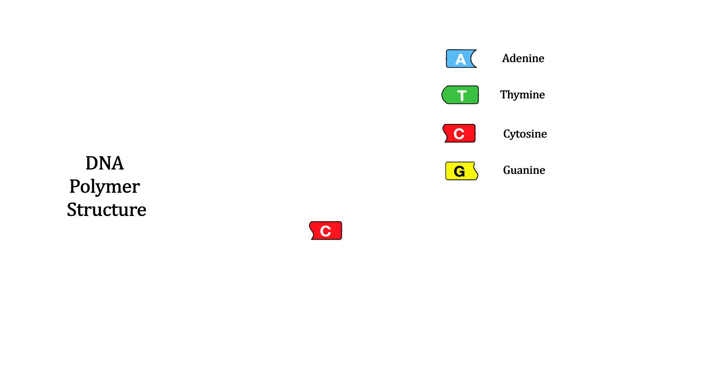We'll start with cytosine. The second is a deoxyribose sugar, S, joined to the base by a covalent bond. The third is a phosphate group, P, joined to the deoxyribose by a covalent bond. This is a DNA nucleotide.